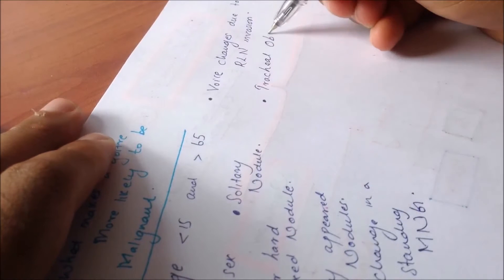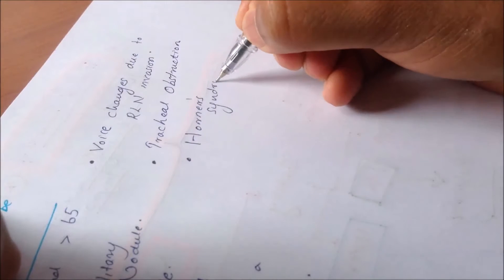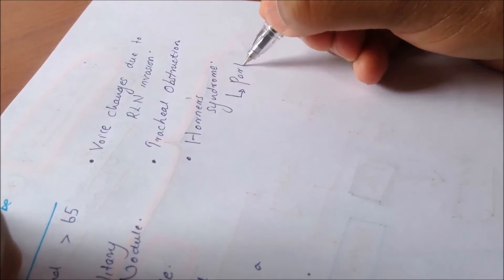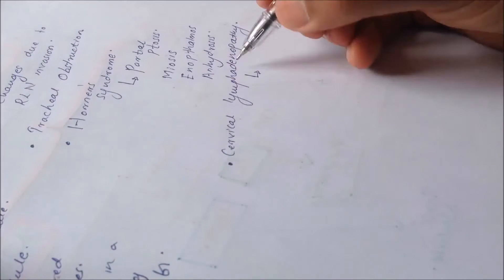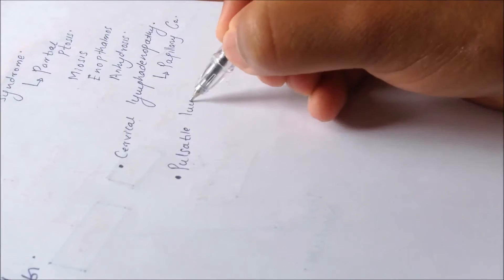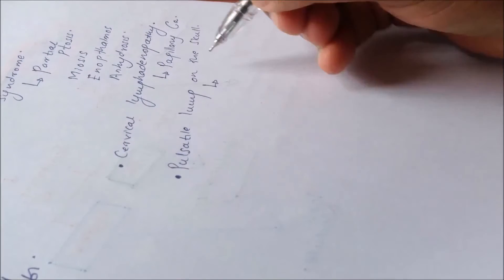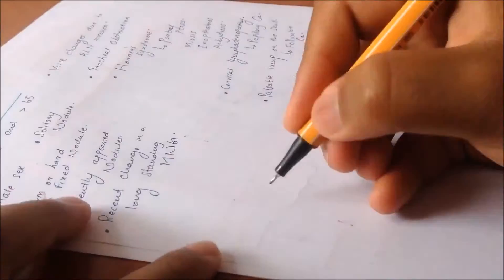If there is any presenting tracheal obstruction, or if there is Horner syndrome — which consists of partial ptosis, pupillary constriction, enophthalmos, and decreased sweating — or if there is presenting cervical lymphadenopathy, a pulsatile lump on the skull, or Berry's sign, each of these will be explained in detail.